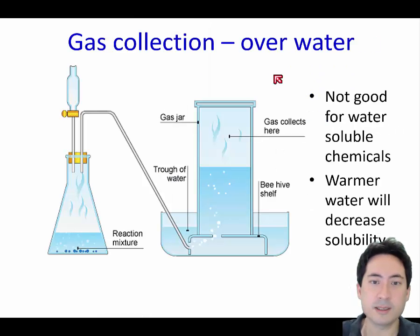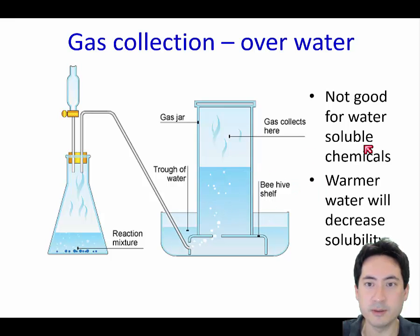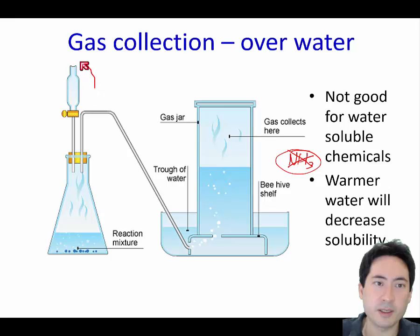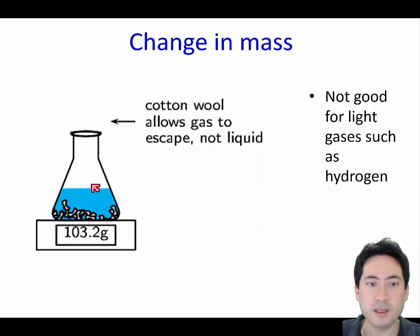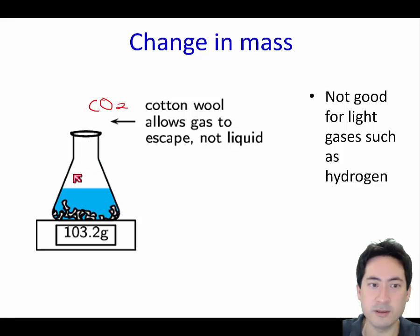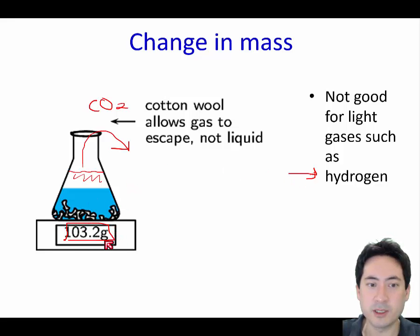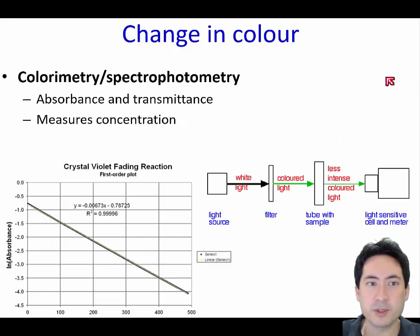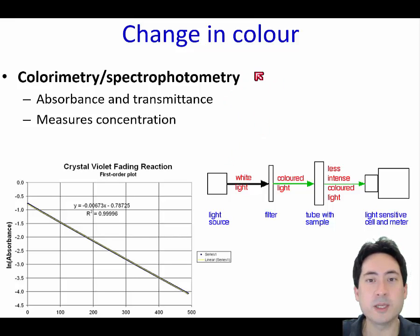When collecting gas over water, make sure the gas is not soluble — ammonia would not be acceptable as it's highly soluble. For carbon dioxide, which is relatively heavy, you can measure the change in mass, though some residual gas may remain. Don't try the mass method for hydrogen — it's too light and measurement errors will be too large. Spectrophotometry is a better option for colour changes; use a colourimeter or spectrophotometer, which is more accurate than a clock reaction watching an X disappear through precipitate formation.